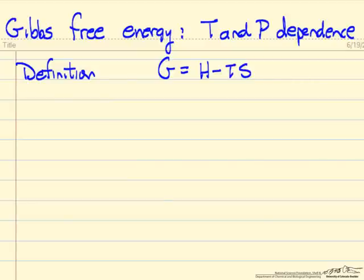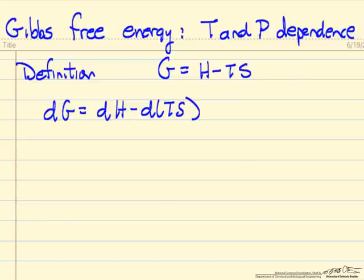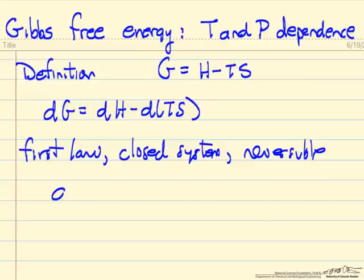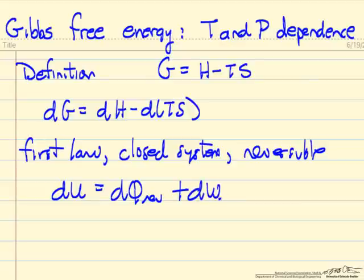We start with our definition of Gibbs free energy and then we are interested in differential form, so dG equals dH minus dTs. And then we will go back to the first law for a closed system and reversible. So change in internal energy is the heat added reversibly.